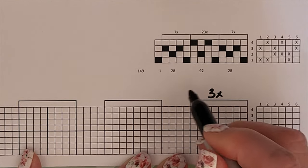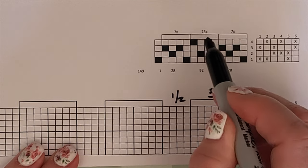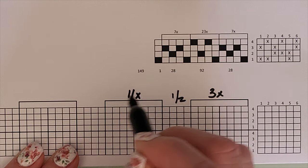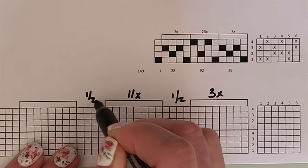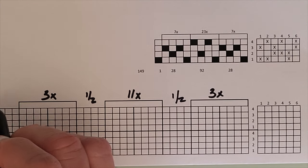So this is going to be three repeats, and this is going to be a half a repeat. We have 23 repeats here, so that's going to be 11 repeats and a half, and then we have three repeats and a half.